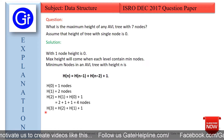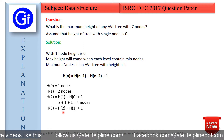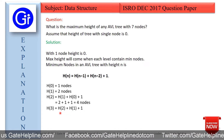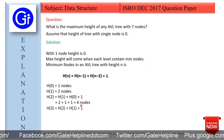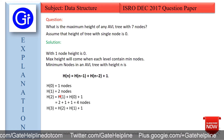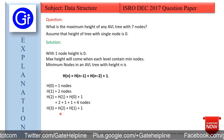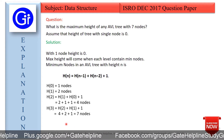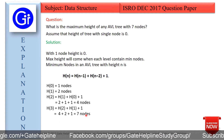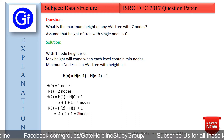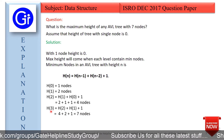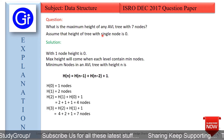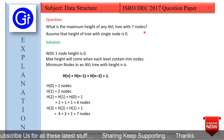For H(3) it will be H(2) + H(1) + 1, that is 4 + 2 + 1 = 7 nodes. So we need a minimum of 7 nodes in an AVL tree with height 3. Therefore, the maximum height of an AVL tree with 7 nodes is 3.